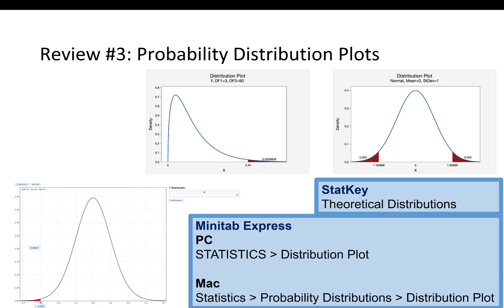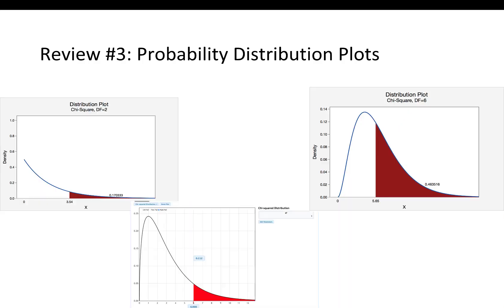The third topic I want to review is probability distribution plots. StatKey will make these for the Z, T, F, and chi-square distributions. Minitab Express has even more options. Like the T and F distributions, the chi-square distribution looks different depending on the degrees of freedom. These are some examples of chi-square distributions — you can see that they are all skewed to the right. We will learn how to make these plots when we get to the first learning objective.